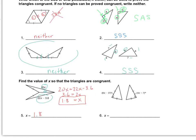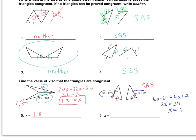On the next one, I've got this side to this one, and then this one to this one, with an included angle — so this would be by side angle side. That means I need these two angle expressions to be equal: 6X minus 27 equals 4X plus 7. So 2X equals 34, and X equals 17.